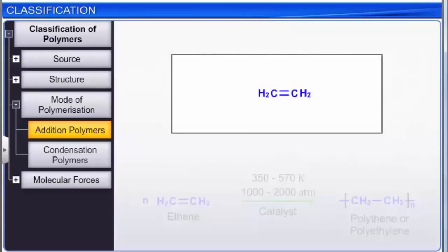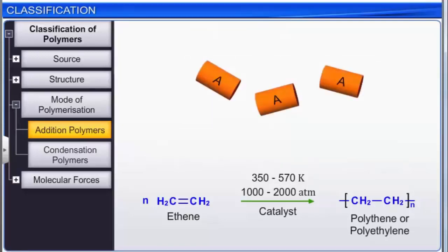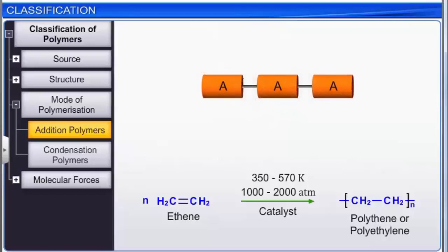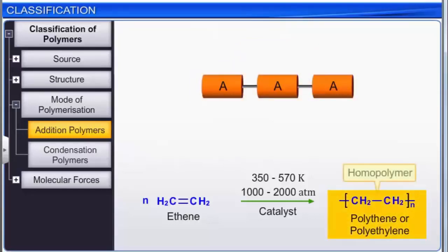For example, ethene contains a carbon-carbon double bond. When polymerized, it forms polythene or polyethylene, which has all single bonds. Addition polymers obtained from the polymerization of a single monomer are referred to as homopolymers. Polythene is a homopolymer.